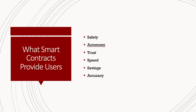Savings: smart contracts can save you money because they knock out the middleman — you don't have to pay for notaries or lawyers, which can be very expensive. And lastly, accuracy: automated contracts are not only faster and cheaper, but they also avoid the errors that come with manually filling out heaps of forms and paperwork.